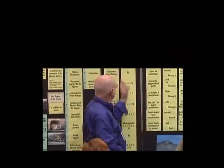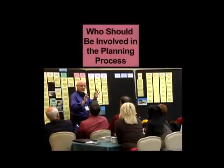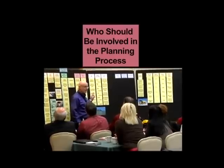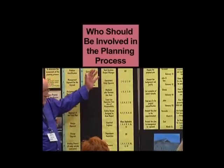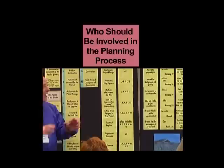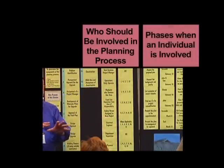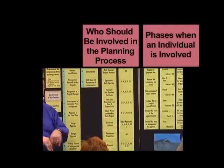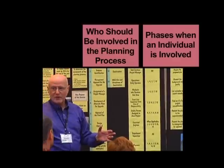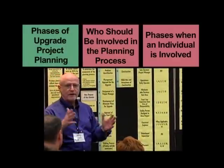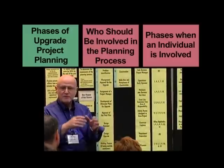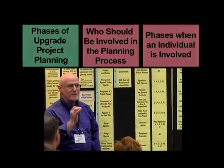Then they work through it, developing who the key stakeholders are that need to be involved in the planning process. On this one you can see there are about 12 in different forms. Then they came over and said, who needs to be involved when? Because everybody doesn't need to be in each stage all the time. There's way too much of that groupiness stuff going on — we need to get everybody involved and all that. We're against that. We say get the right people involved when they need to be involved for the right reasons.